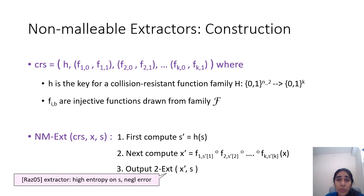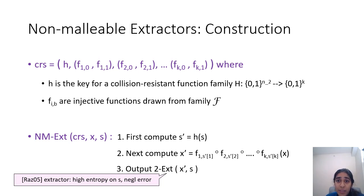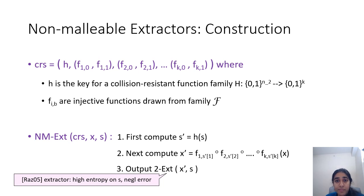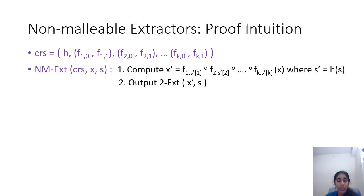The required two-source extractor needs negligible error, but we can allow one of the sources — namely S — to have high entropy. Since we don't simultaneously require low entropy and low error, such a two-source extractor can be obtained in the high-entropy, low-error regime, based for example on Raz's construction. I'll leave the construction there and move on to discussing the proof intuition.